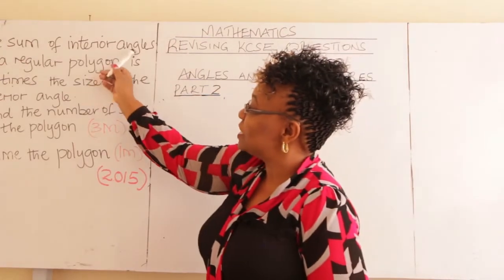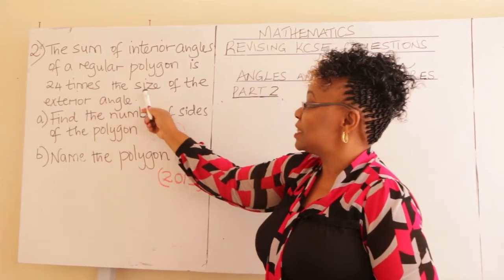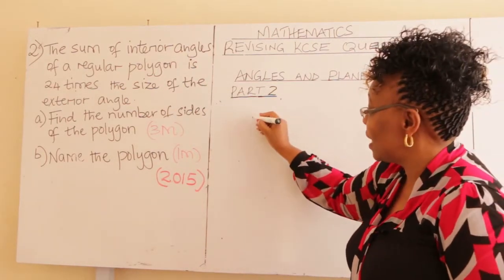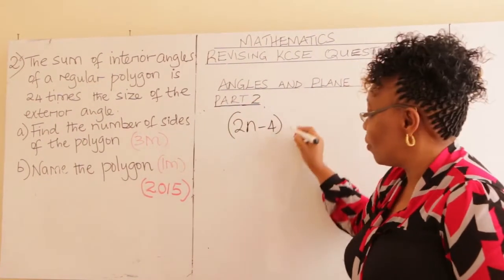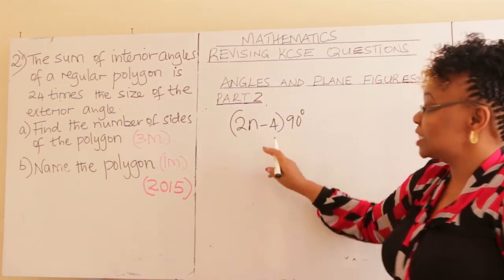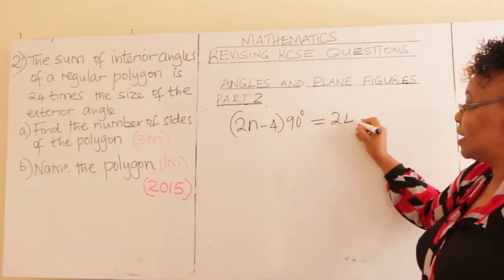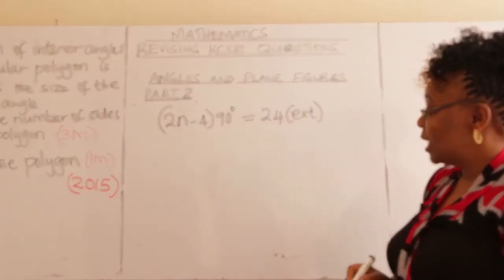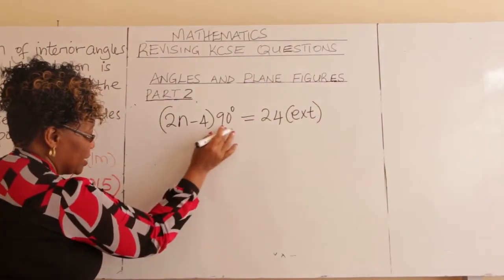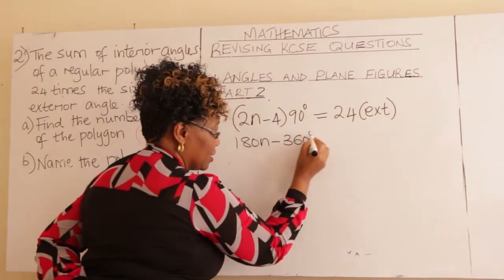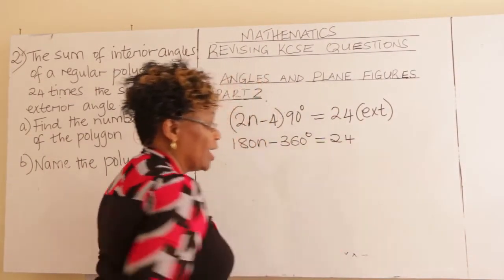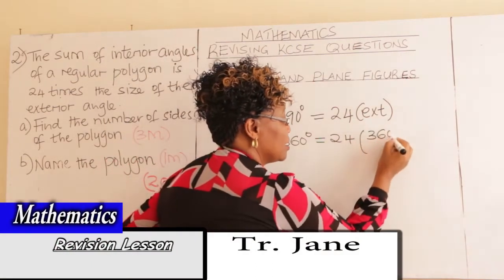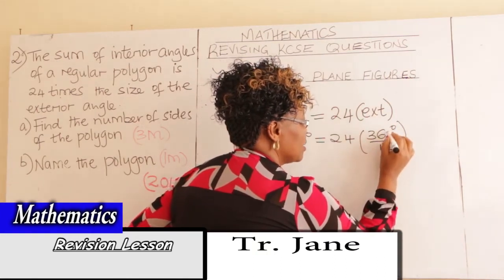We know the sum of interior angles is (2n − 4) × 90° = 180n − 360°. This equals 24 times the exterior angle. The exterior angle of a regular polygon is 360°/n, so the equation becomes: 180n − 360° = 24 × (360°/n).